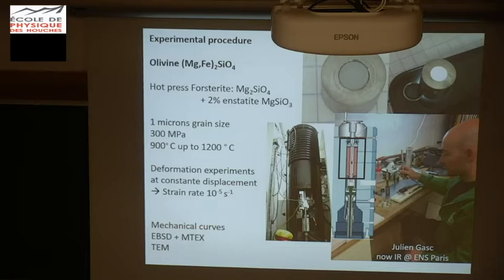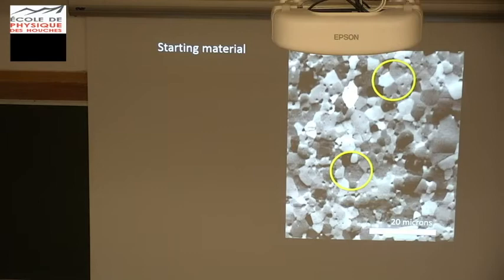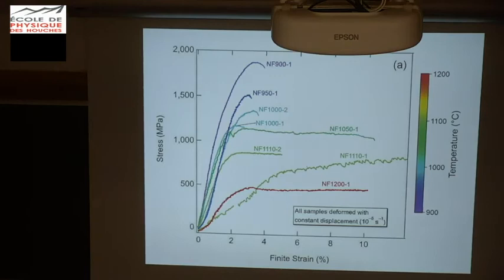I will show you the mechanical curves, the EBSD maps obtained by MTEX, and the new stuff this year is TEM. The starting material was produced by hot-pressing nano-forsterite in Japan, and compared to what we usually produce in olivine, here you see very nice grain boundaries — straight, nice triple junctions. Normally our hot-pressed starting material is not as nice as this one. There is almost no porosity — a great starting material.